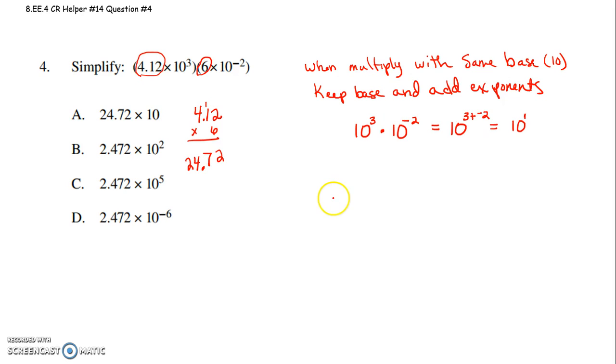So now we're not yet in scientific notation, but if I want to write my answer, it would be 24.72, once I multiplied my first factors together, times, and then we get 10 to the first. When we put our powers of 10 together, the issue is this is not in scientific notation,